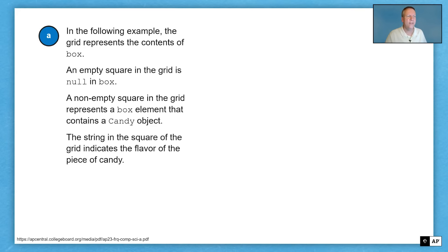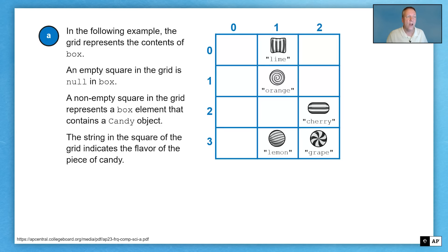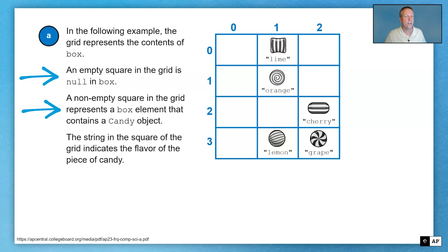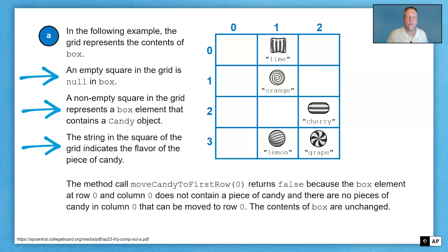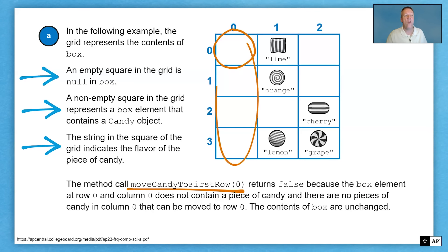Let's look at some examples. In this grid, an empty square represents null, and a non-empty square contains a Candy object with a flavor string obtained by calling getFlavor. If we call moveCandyToFirstRow(0), this returns false because the box element at row zero, column zero does not contain a piece of candy, and there are no pieces in column zero that can be moved — so it returns false and the box is unchanged. If we call moveCandyToFirstRow(1), this returns true because the box element at row zero, column one already contains a piece of candy, so nothing needs to be done.